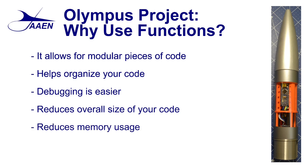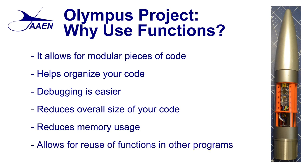As we reduce the size of the code and the amount of repetition in the code, that also helps reduce memory usage. And when you're talking about a small microcontroller like the Arduino, memory usage can become a big thing — we did experience that with the Olympus project. Anything we can do to reduce memory usage is a plus. One of the last advantages is you can reuse these functions in other programs. That's what made coding the Olympus project go so much faster — we were able to reuse a lot of code from both Project Icarus and the APAM project. Code reuse is a really big thing.